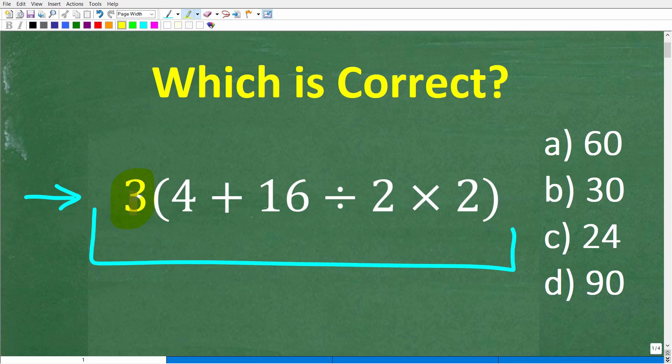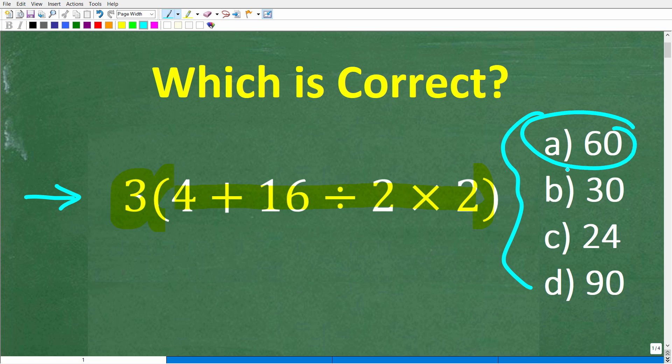We have 3 times parentheses 4 plus 16 divided by 2 times 2 in parentheses. And this is a multiple choice question. Let's take a look at our answers. So A is 60, B is 30, C is 24, and D is 90.